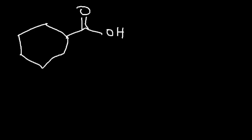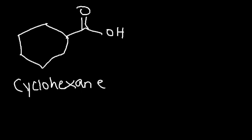What if we have a ring and a carboxylic acid? We have 6 carbons in a ring, so it's a cyclohexane ring, plus a carboxylic acid. This is simply called cyclohexane carboxylic acid.